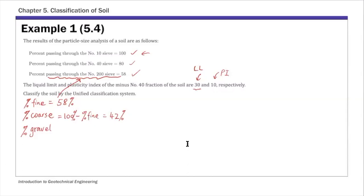100 percent passes number 10, which implies that 100 percent passes number four as well. So if you would put number four sieve, it would be put above number 10. So 100 percent of the soil passes number four. So this is zero percent. So nothing retained above number four.